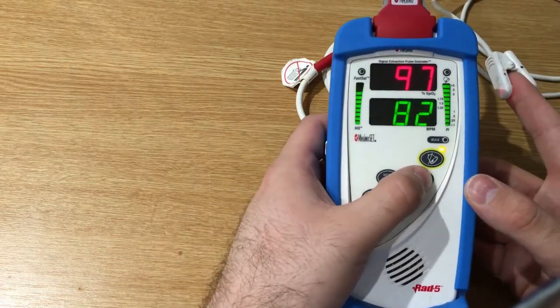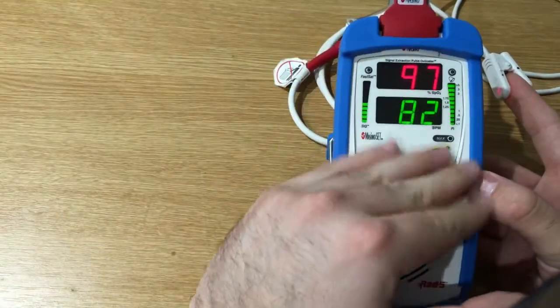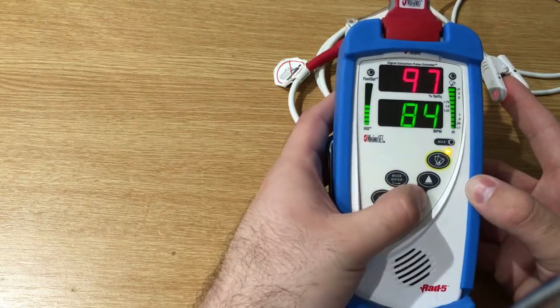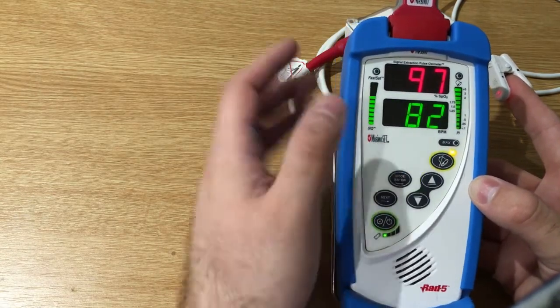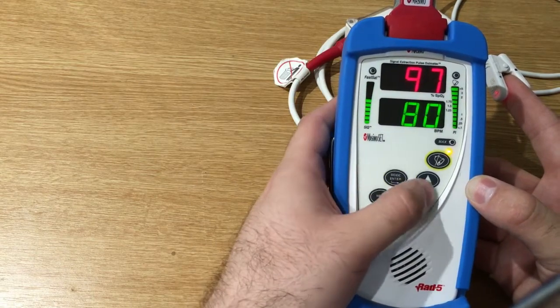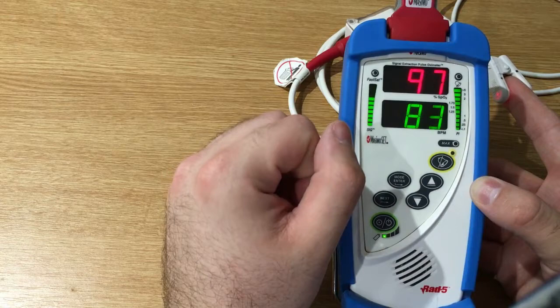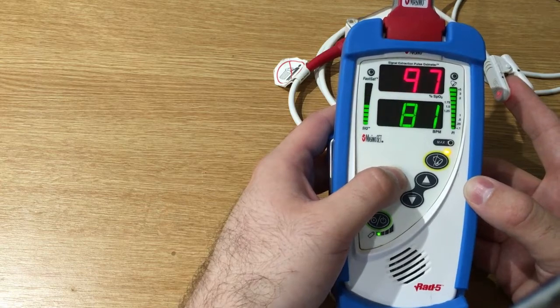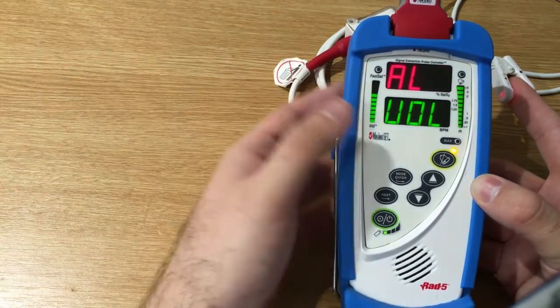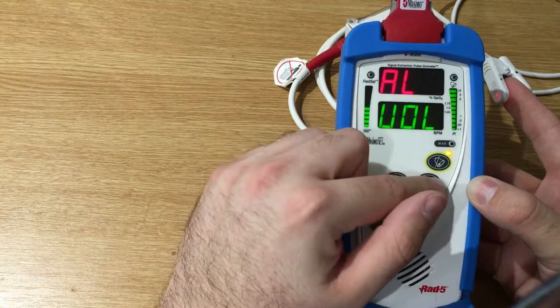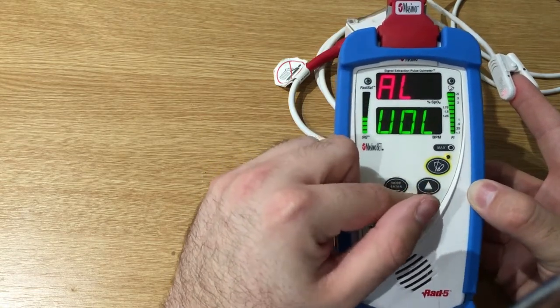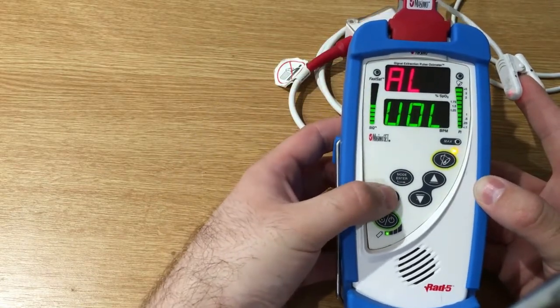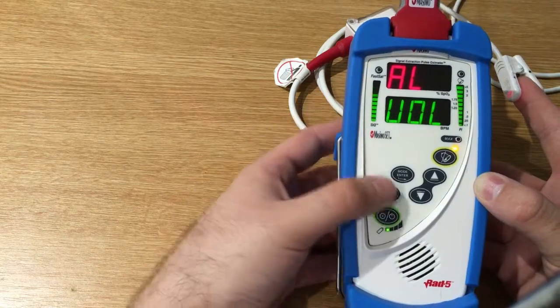So if we press these two buttons in the normal screen, we can select the volume for the tone-to-beat volume. Here we can enter the menu. So here we have the alarm volume, and if we press this button we go into a sub-menu.